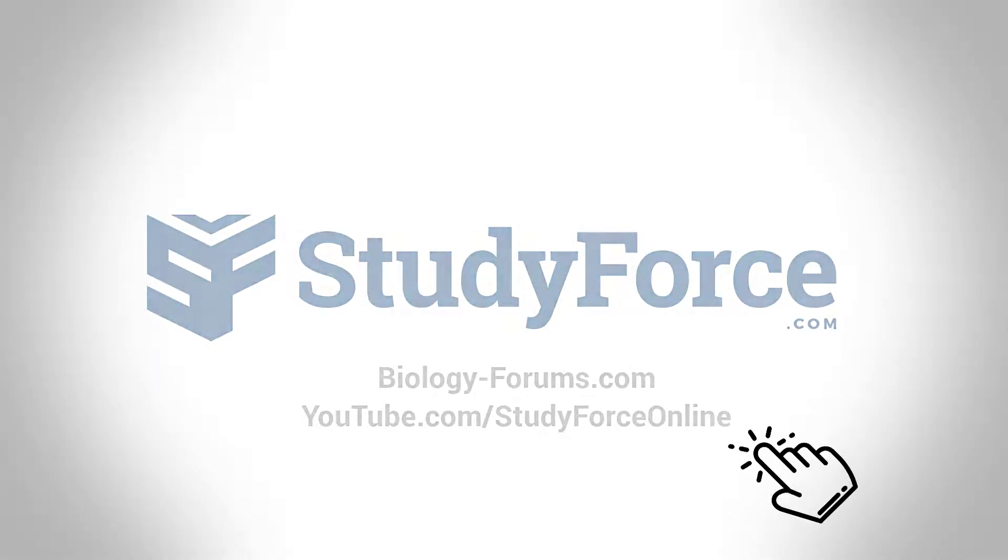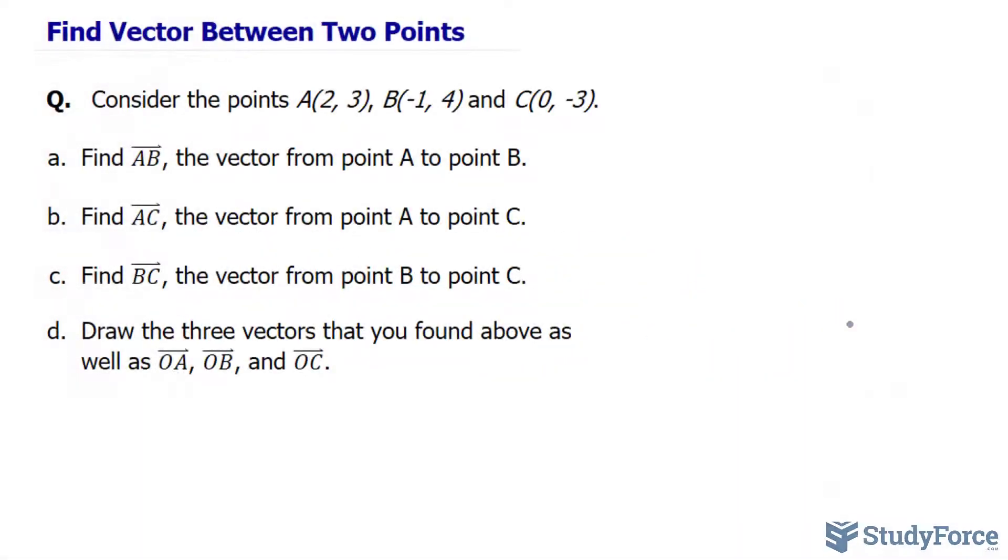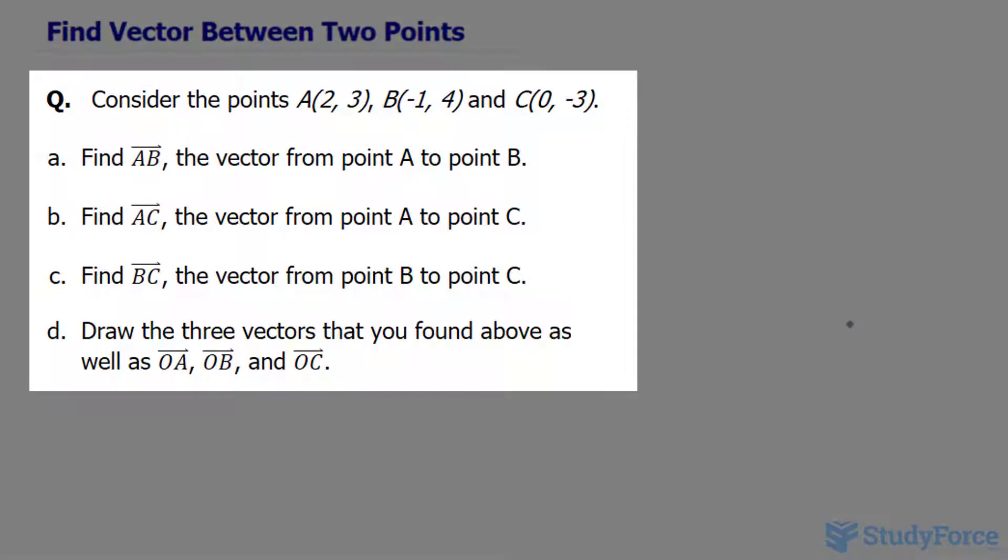In this quick tutorial, I'll show you how to find the vector between two points. Consider the points A, which has the coordinates (2, 3), B at (-1, 4), and C being (0, -3).